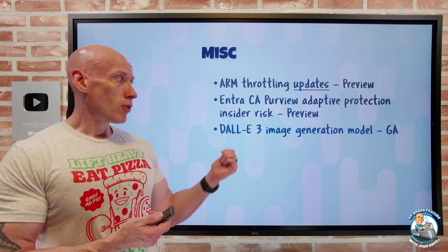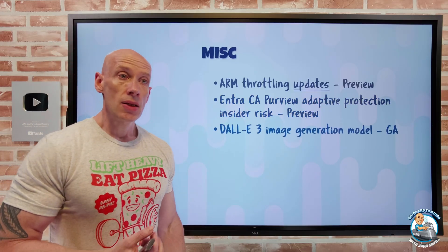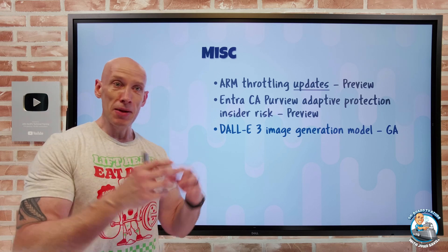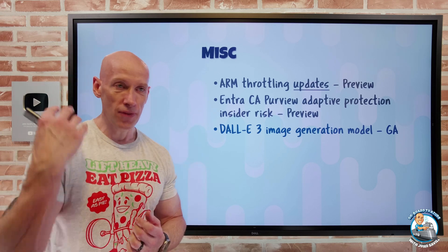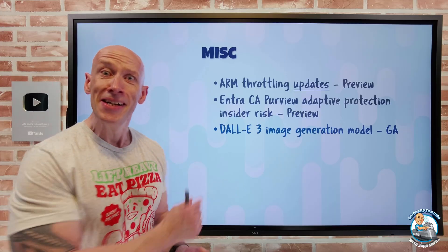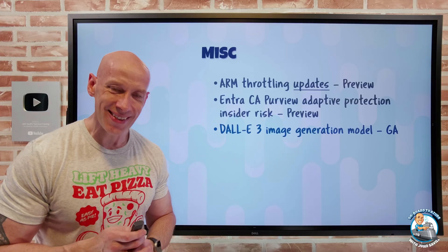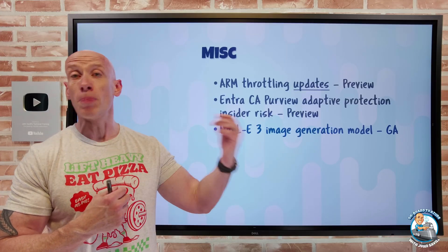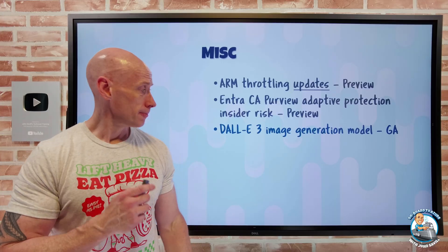DALL-E 3 image generation model has gone GA. Give it a prompt — create a picture of a super villain English guy being chased by a hamburger — and that's now a GA service available through REST and Python in your Azure OpenAI environments.